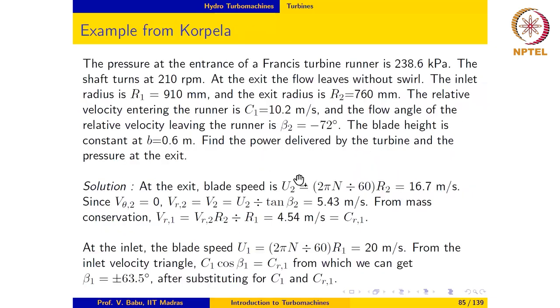So we can evaluate β1 as arc cosine Cr1 divided by C1, which gives us two possible answers: plus or minus 63.5 degrees.